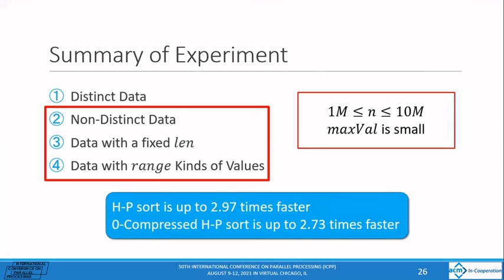When max val was small for n, HP-sort was up to 2.97 times faster than cub-sort. And zero-compressed HP-sort was up to 2.73 times faster than cub-sort.